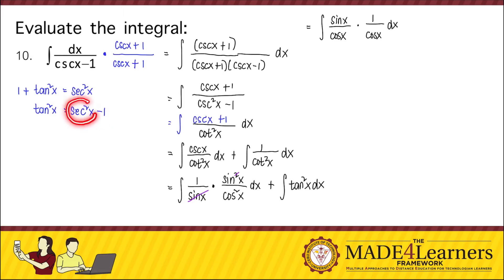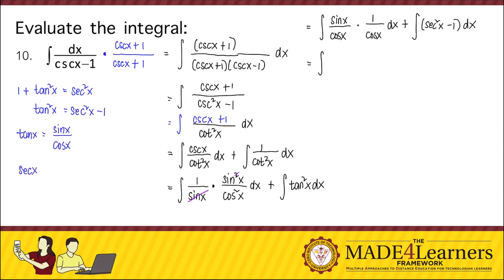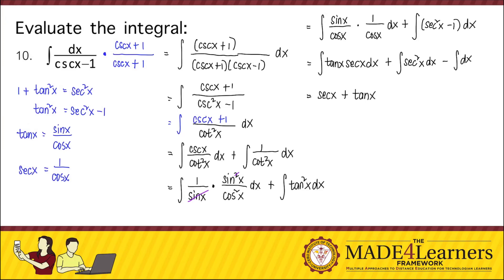We change this using that identity because we have an integration rule for secant squared x. So we have plus the integral of secant squared x minus 1, dx. Recall that tangent x equals sine x over cosine x and that secant x equals 1 over cosine x. This becomes the integral of tangent x secant x, dx, plus the integral of secant squared x, dx, minus the integral of dx. The integral of tangent x secant x is secant x, the integral of secant squared x is tangent x, and the integral of dx is x, plus C.